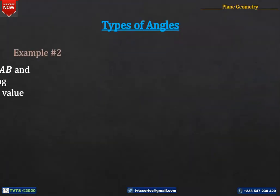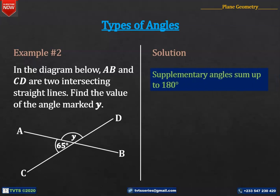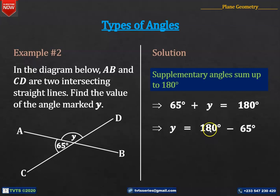Example number 2. In the diagram below, AB and CD are two intersecting straight lines. Find the value of the angle marked Y. Solution: The hint here is that supplementary angles sum up to 180 degrees. This implies that 65 degrees plus Y is equal to 180 degrees. Grouping like terms, we have Y is equal to 180 degrees minus 65 degrees, which is 115 degrees. Hence, Y is equal to 115 degrees.